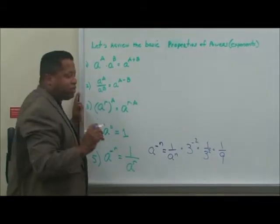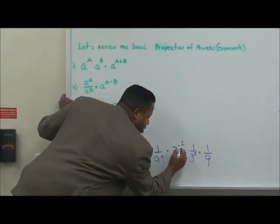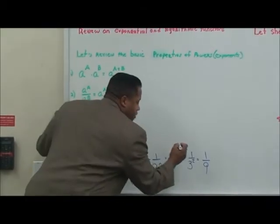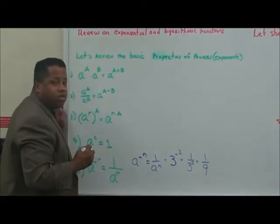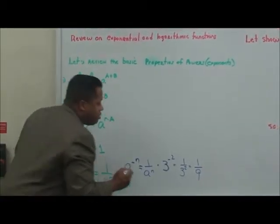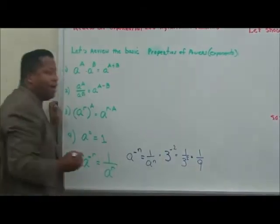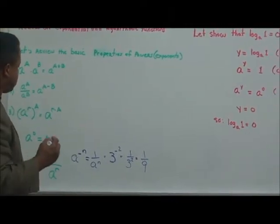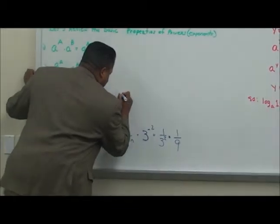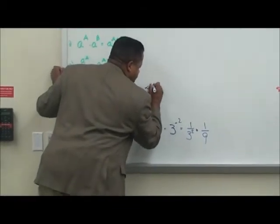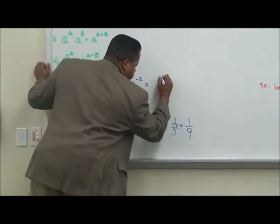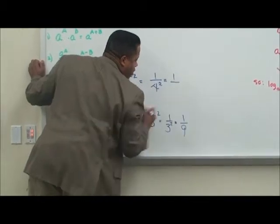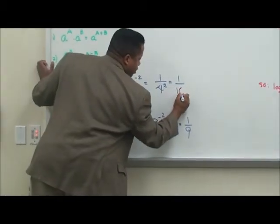When three is raised to the negative two power, that's going to be one over three to the second power, which gives you one over nine, because three times three is nine. For another example, four to the negative second power is one over four to the second power, which gives you one over sixteen, because four times four is sixteen.